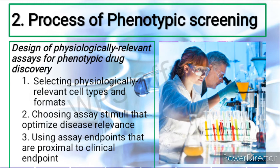Second is to choose an assay stimuli that optimizes disease relevance. These may be biomarkers that are measurable in the chosen cell type or animal model. Then, these assay endpoints or assay stimuli are measured and approximated to the clinical endpoint. This is to ensure that the lead or hit compounds have actually produced the effect, as seen in the changes of the phenotypes, or hitting an assay endpoint with the chosen biomarker that is to be observed.